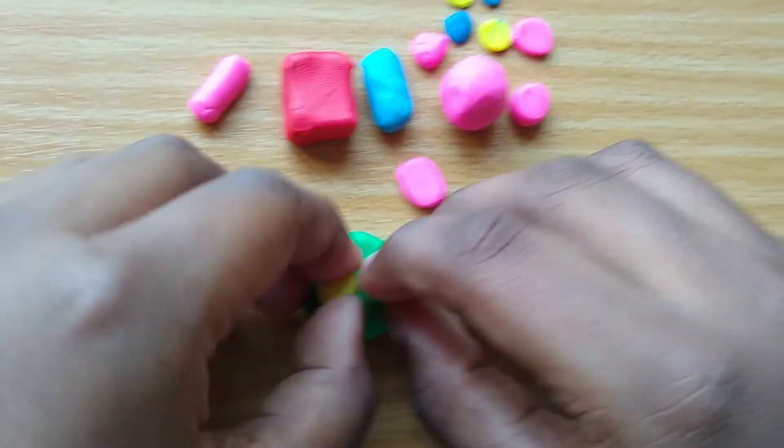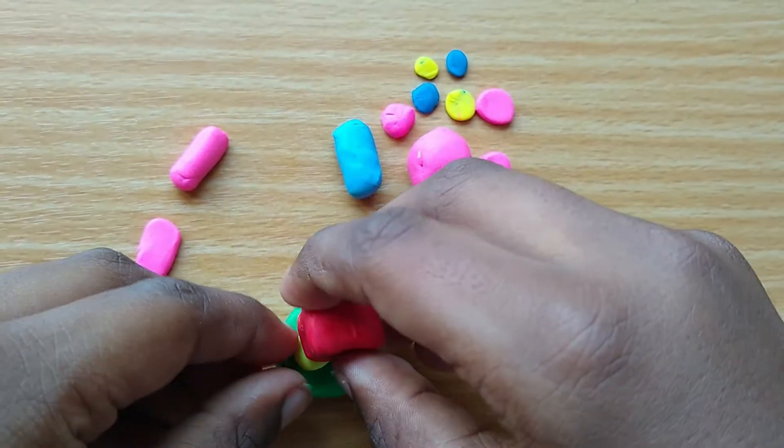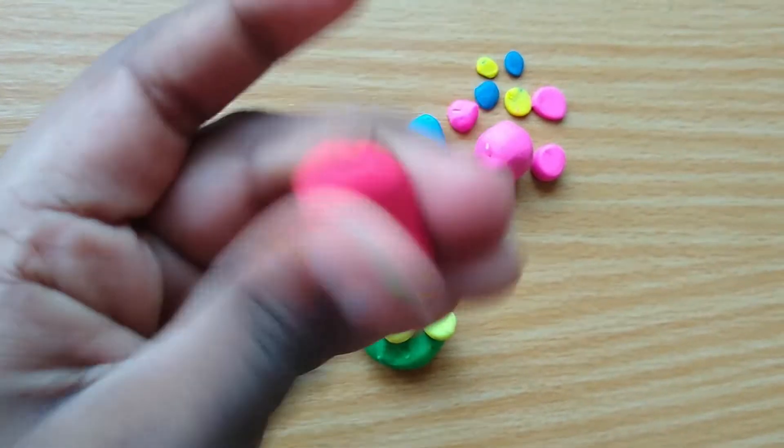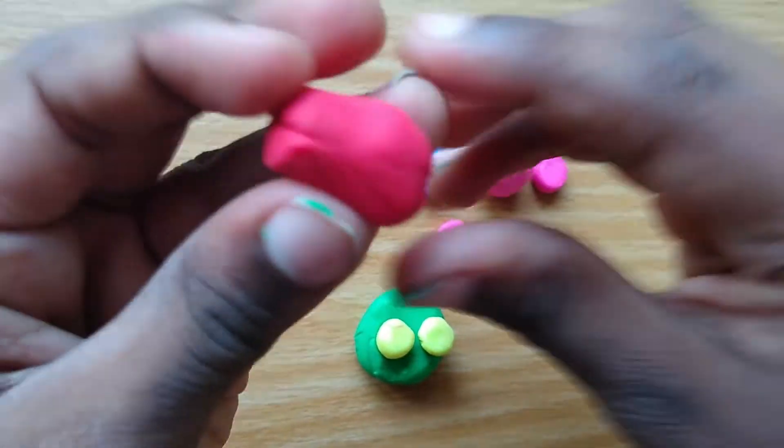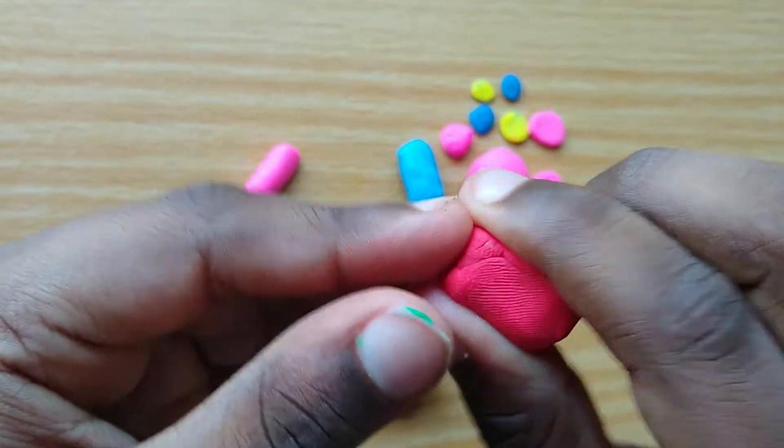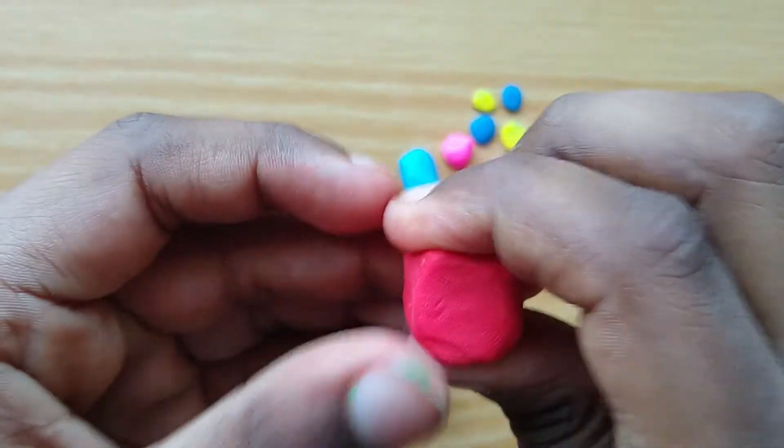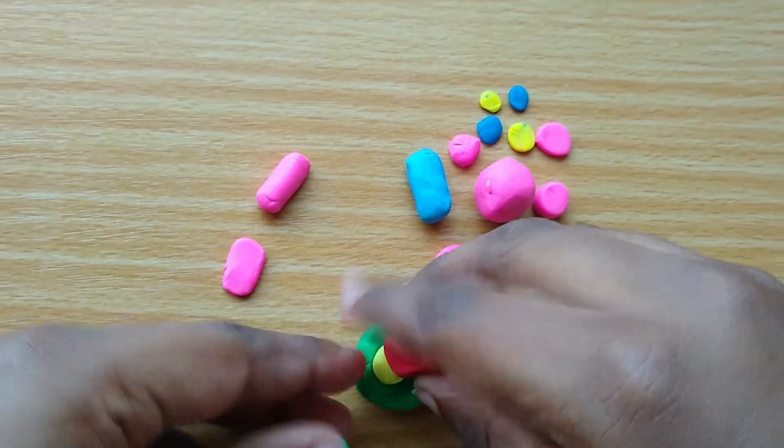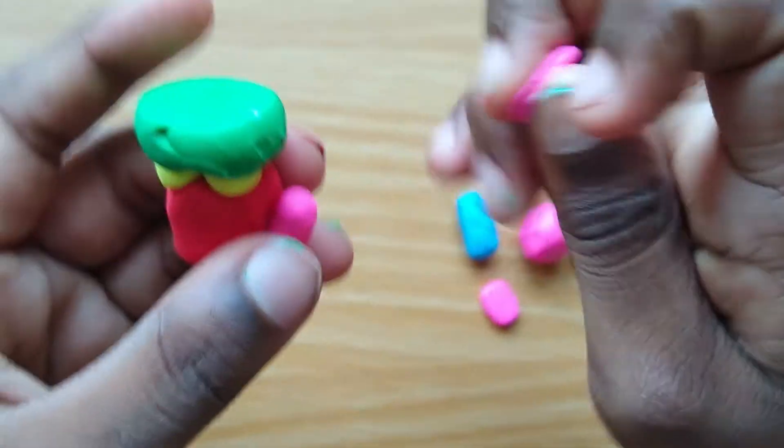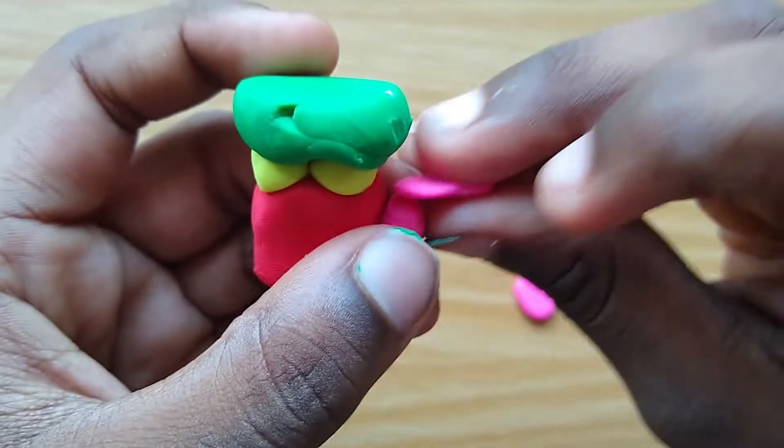So you first put the legs on. Oh yeah, I forgot the body. So you take a circle piece of clay, then you roll it and push on all the sides like this. Then you put it on his legs just like this, and then you put this long side and then his hand part.